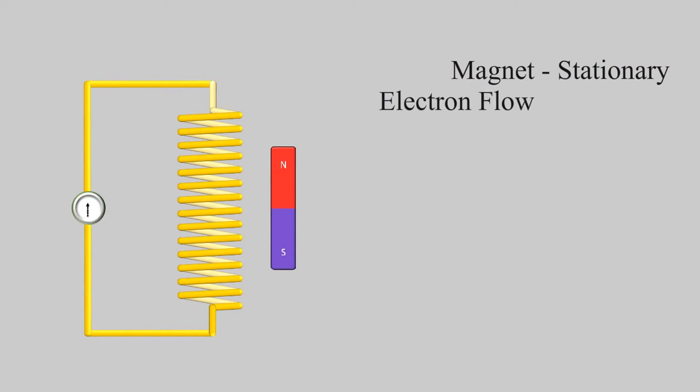When the magnet is stationary there is no electricity flowing in the circuit and hence no deflection of the needle of galvanometer.